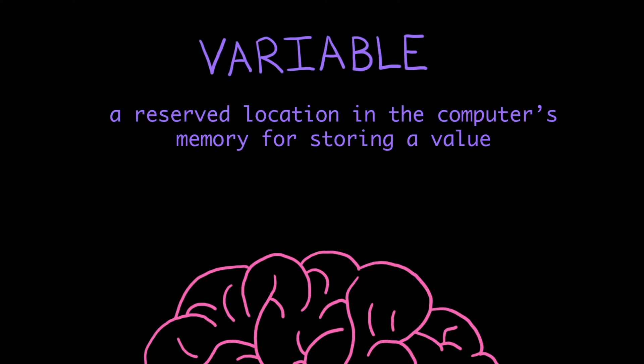A variable is a reserved location in the computer's memory for storing a value. We associate each location with a name, so it's easy for us as the programmers to refer to a specific location later.